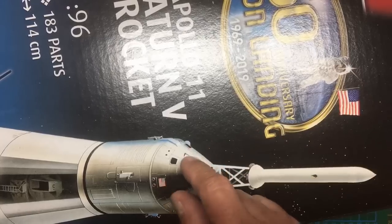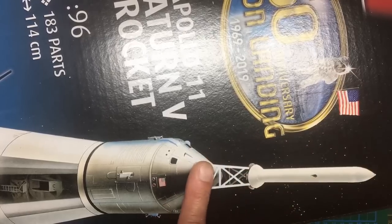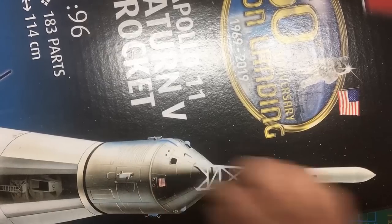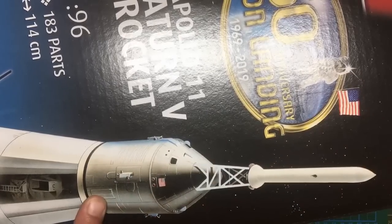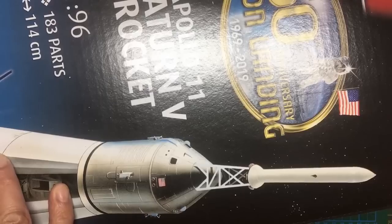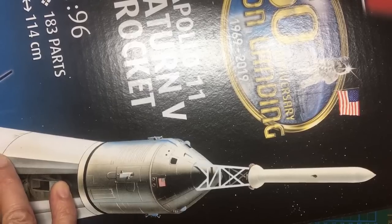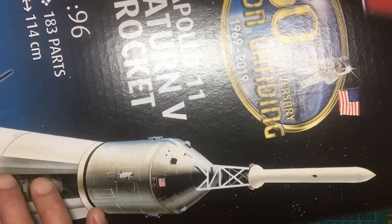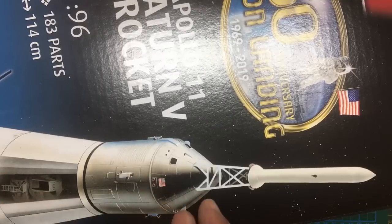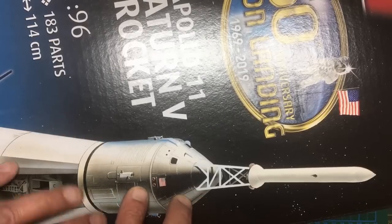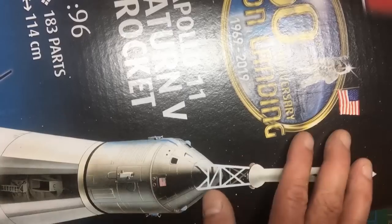What this basically did: if there was an issue on launch, it would blast away and pull the command module away from the rest of the Saturn V, and then they would be parachuted safely into the ocean rather than perish with the rest of the rocket exploding.